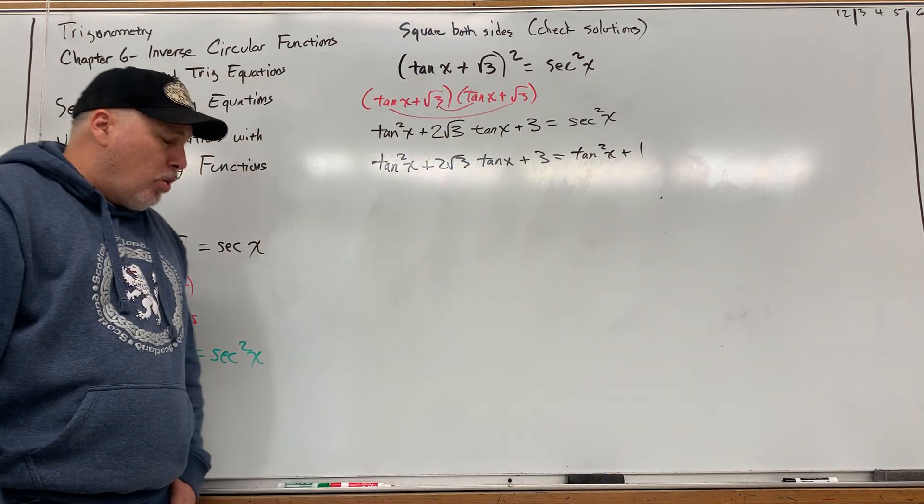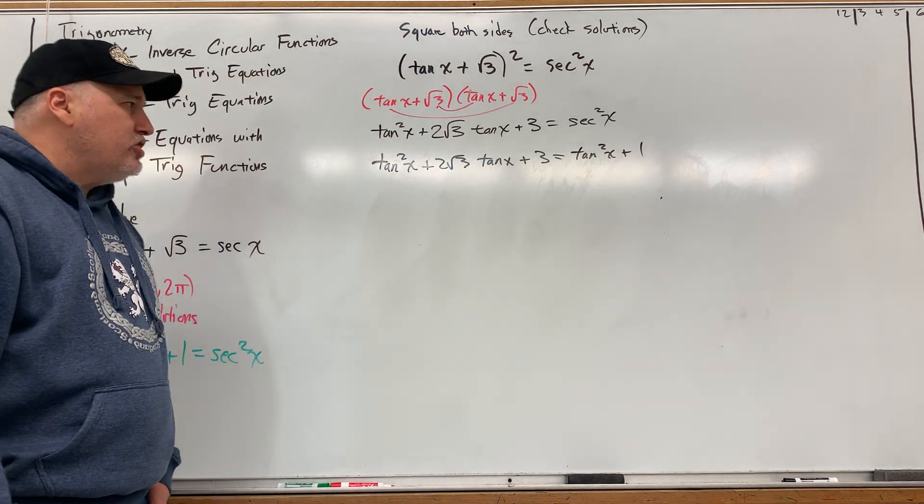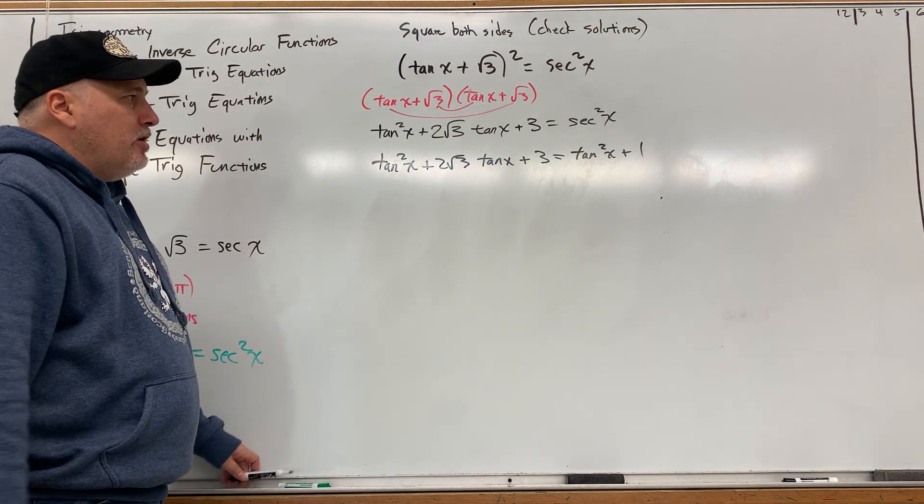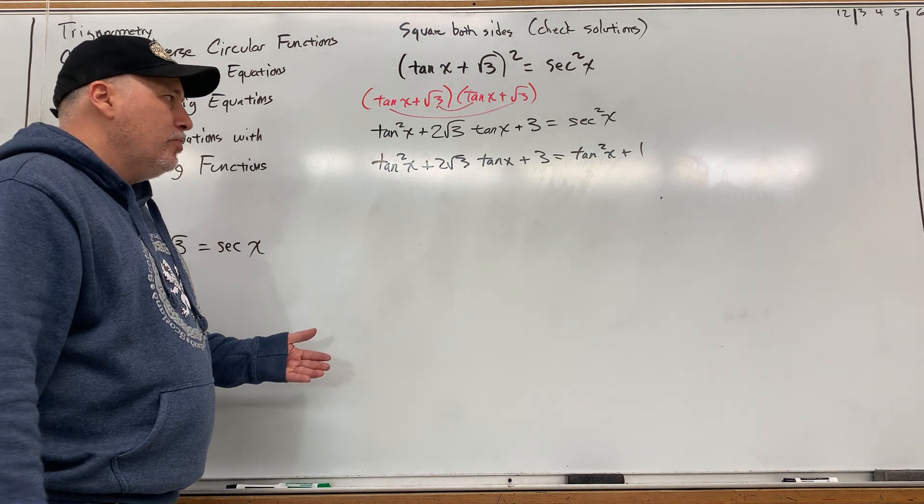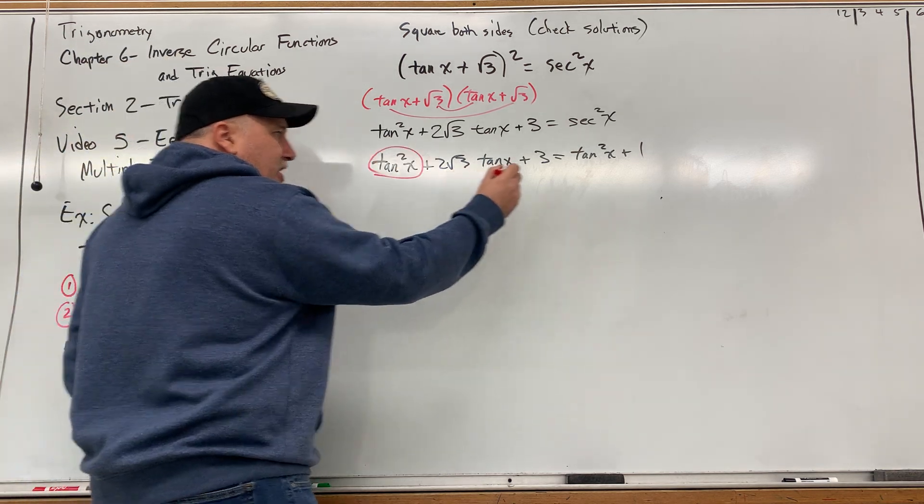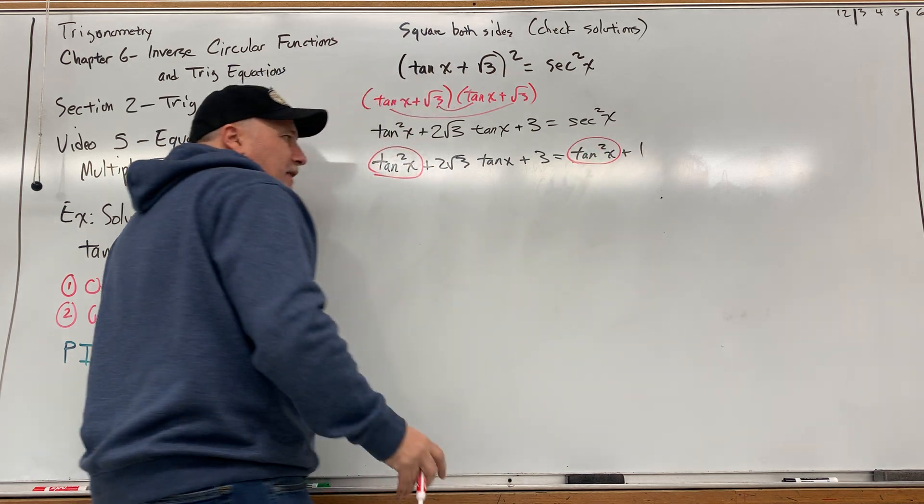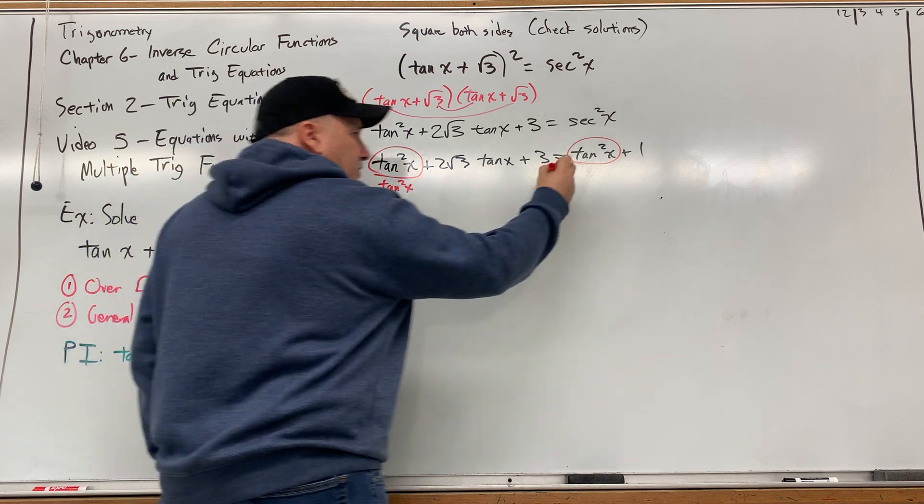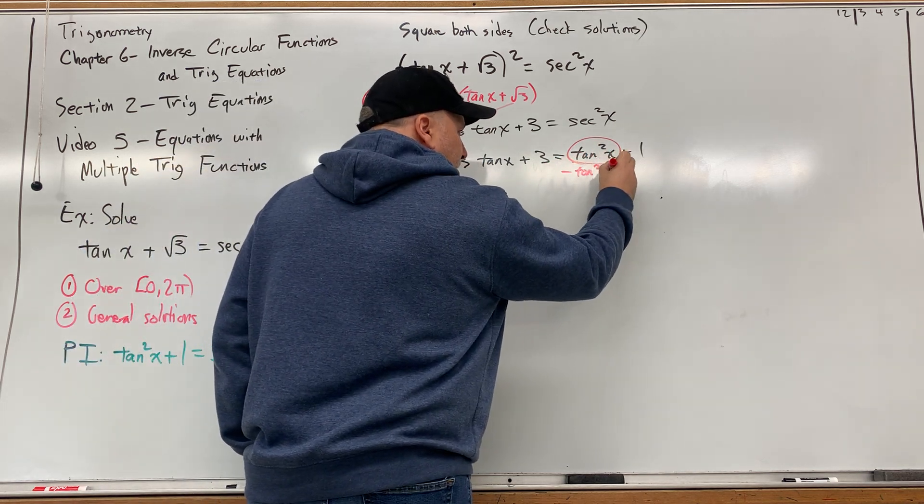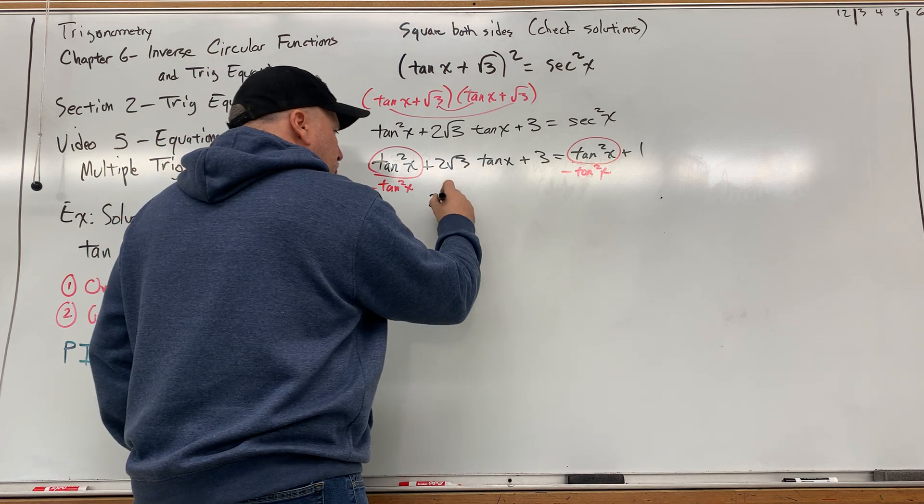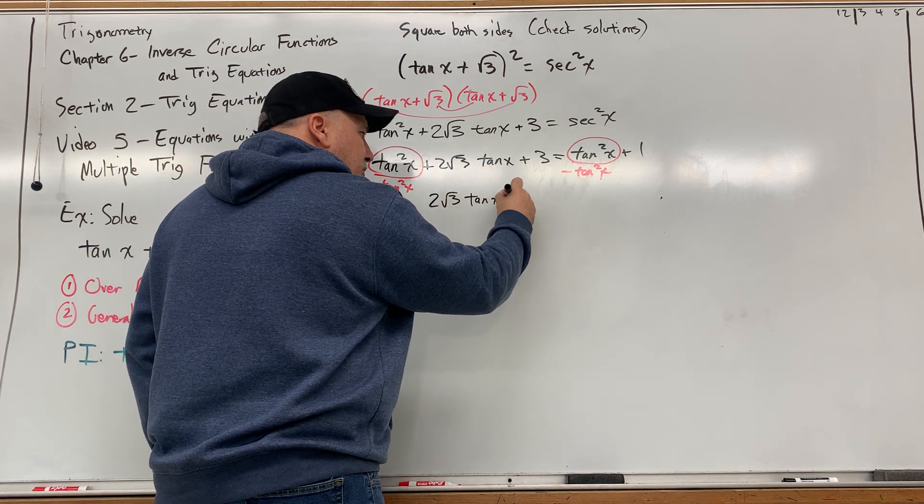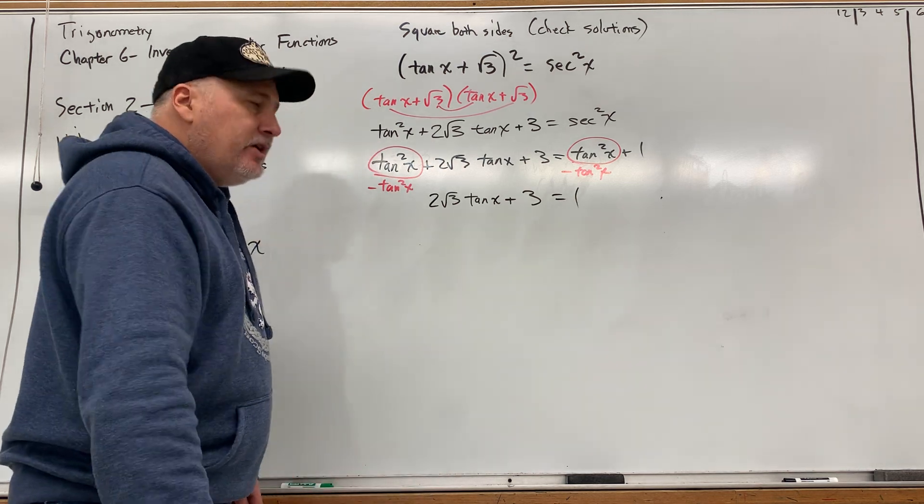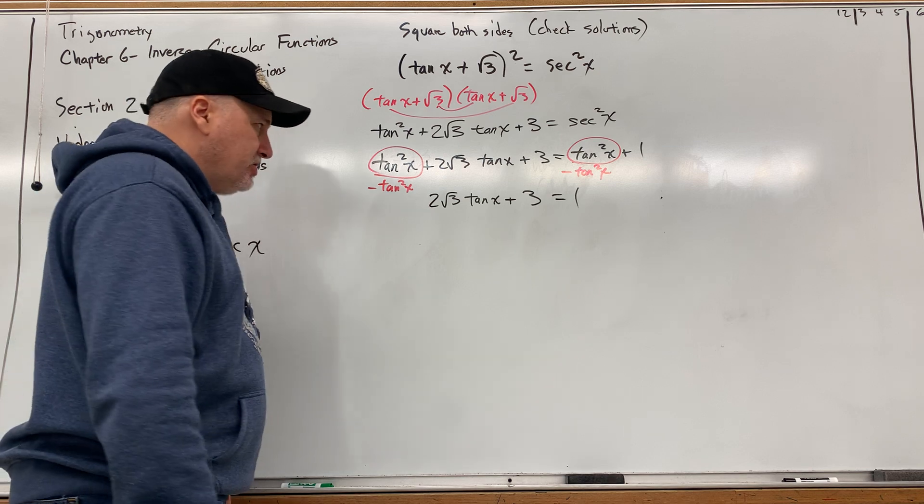And now we've got it down to a basic quadratic trig equation, basic because it only has the one trig function. But it gets even better, because normally when I'm solving I try to get it equal to 0, but if you look closely you'll have a tangent squared x on both sides, which means if I were to try to get everything on one side those would cancel. So let's go ahead and subtract tangent squared x on both sides. And that will leave us with 2 square root of 3 tangent of x plus 3 is equal to 1. And now we've reduced it to a basic linear trig equation because it only has the single trig function tangent of x.